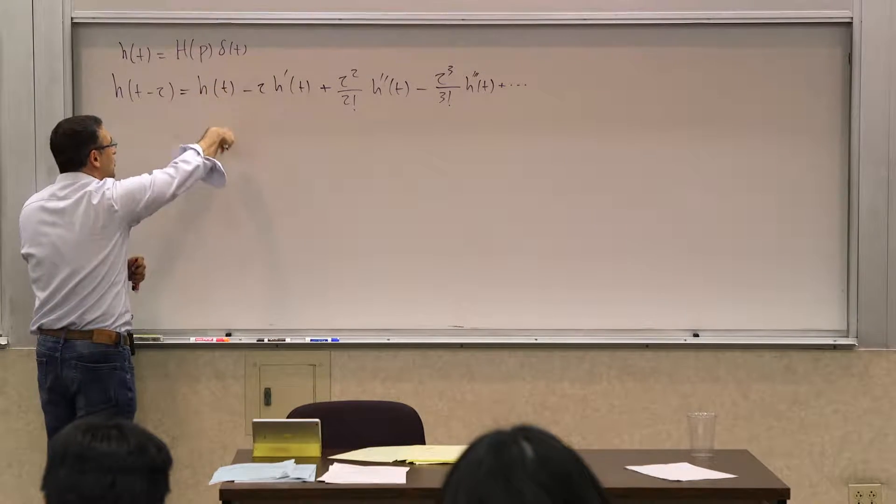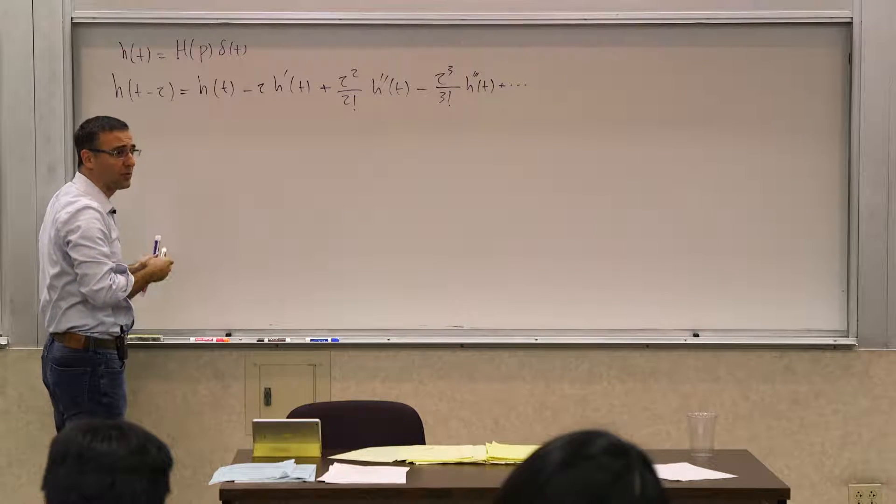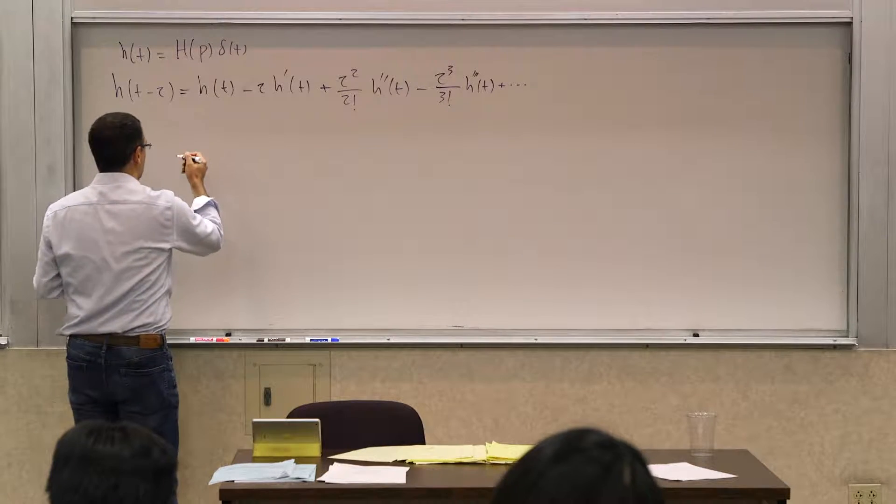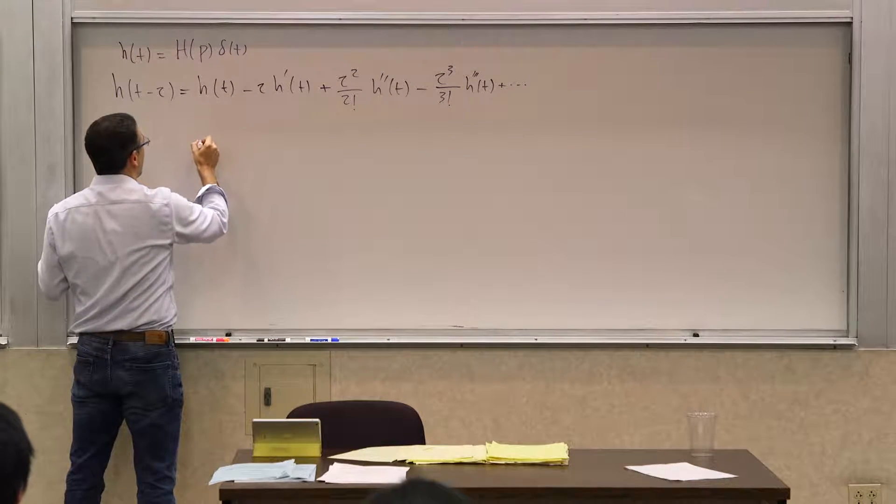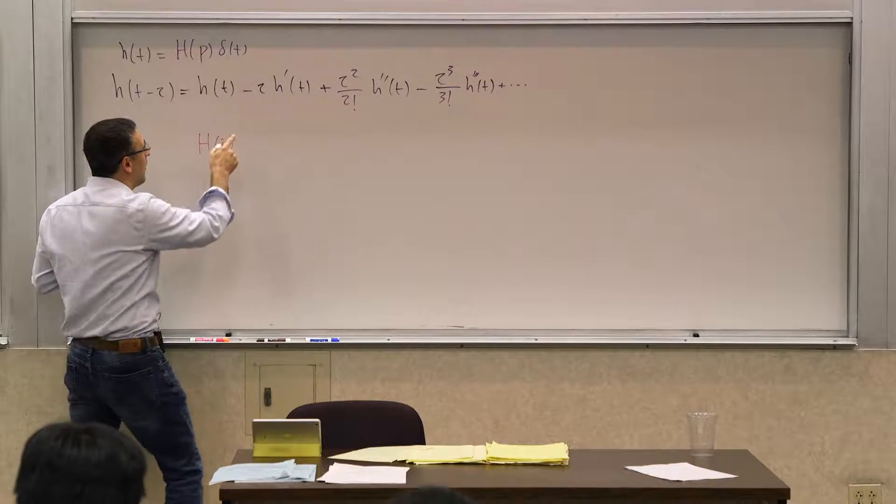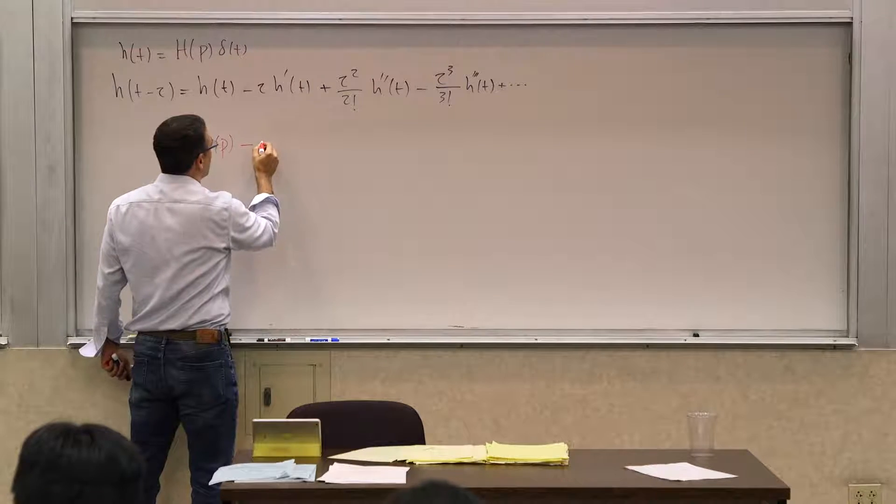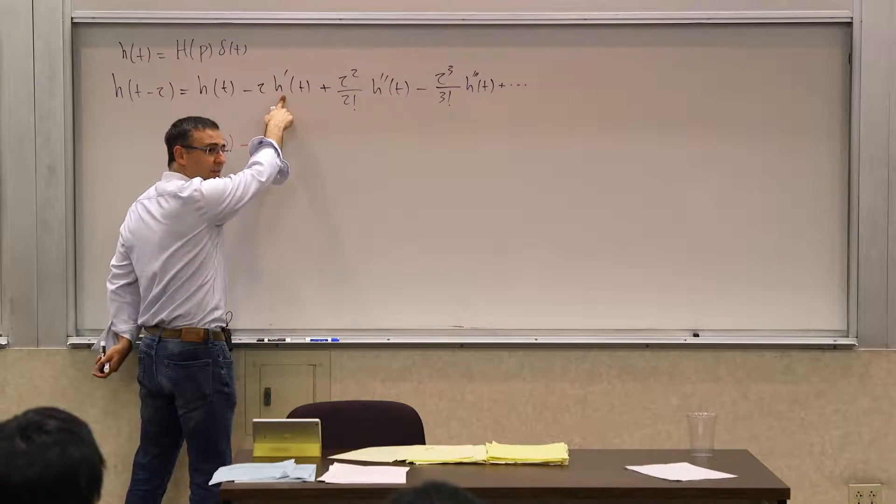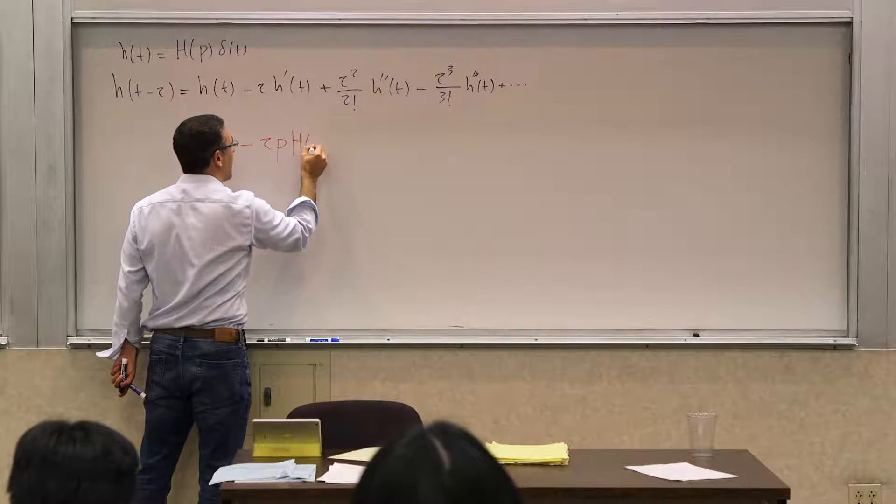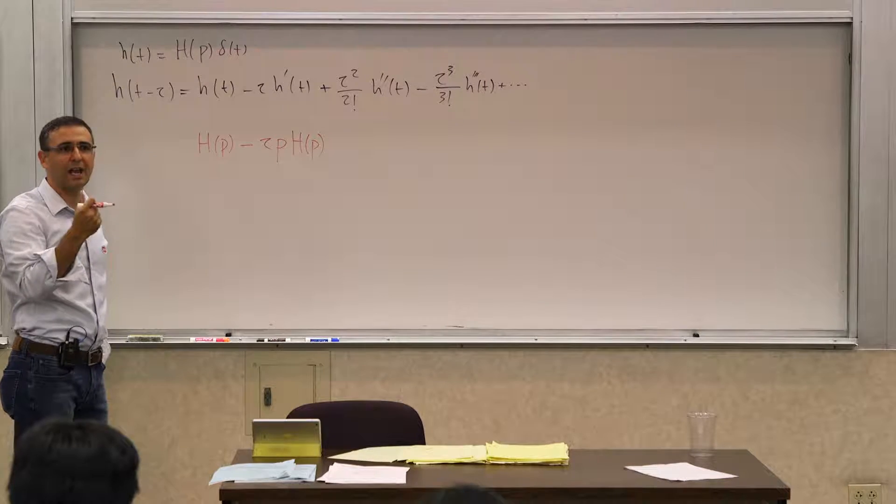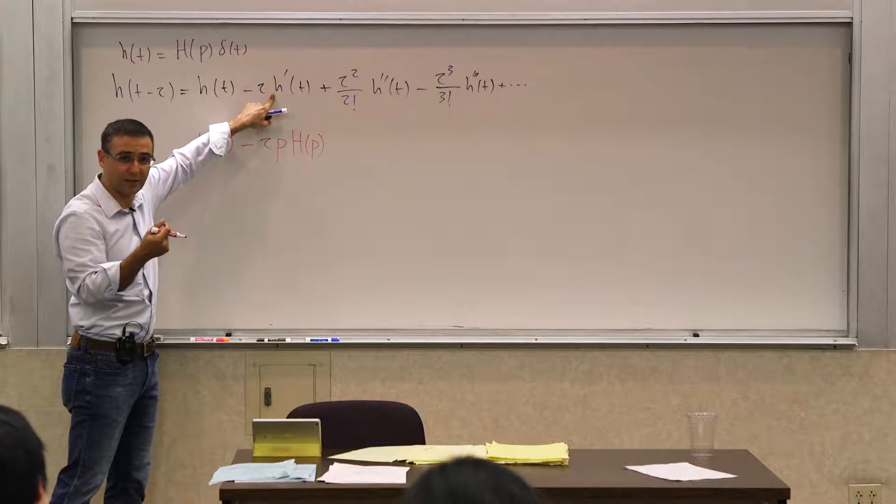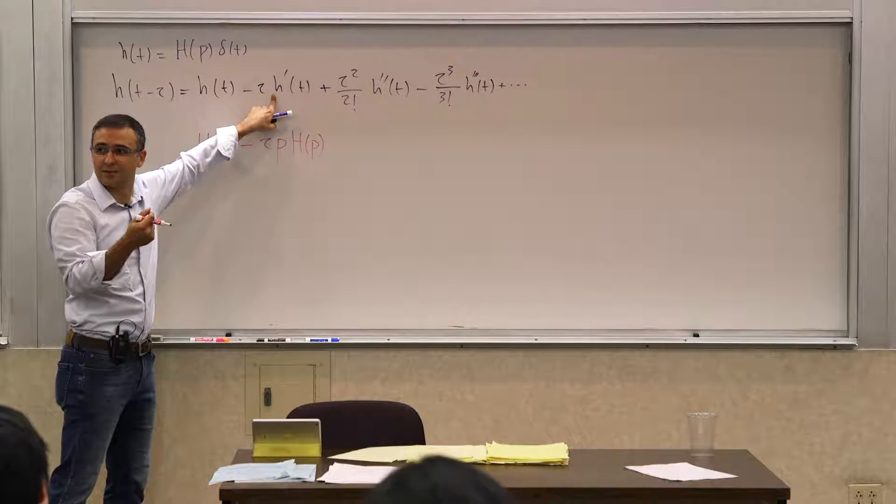So now let's see if we can do one-to-one transfer from this to the operator domain. So we want to see what these correspond to. What is the associated operator with this? It's just h of p. What is the operator associated with this? This is tau, this is the derivative of h. Wouldn't this be tau p h of p? Because capital H of p produces that h of t off of an impulse, and then you put a p up front, you take the derivative.